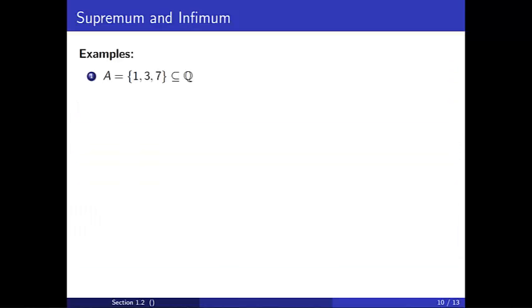Let's go back to our example from earlier. Let A be the set containing the numbers 1, 3, and 7 which we will think of as a subset of the rational numbers. Recall we listed many upper bounds of A, 7, 8, 92, etc. The sup of A, the least upper bound of A is 7. The inf of A, the greatest lower bound of A is 1.